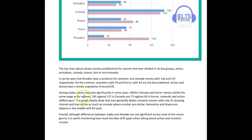'Whilst comedy and horror remain within the same range as for women — 145 against 137 in comedy and 73 against 64 in horror — romantic and action shifted apart.' There's a lot going on in that sentence. If you had phrased it differently or shortened it into two sentences it would be easier to read. Students often think they have to write complex sentences somewhere, and that's true — but simplicity and clarity are far more important. The important thing is that your message gets across. I prefer simple and accurate over complex and confusing.